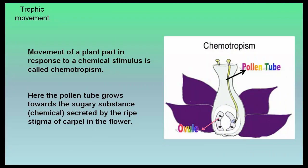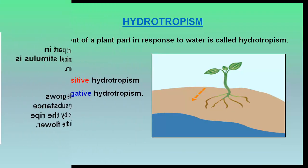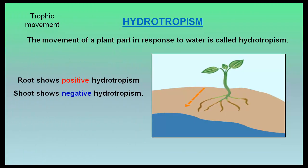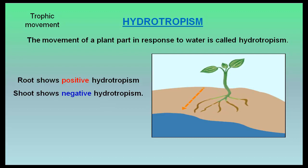Chemotropism is the movement of a plant part in response to a chemical stimulus. For example, the pollen tube grows towards the sugary substance secreted by the ripe stigma of the carpel in the flower. Hydrotropism is the movement of a plant part in response to water. Roots show positive hydrotropism, while shoots show negative hydrotropism.